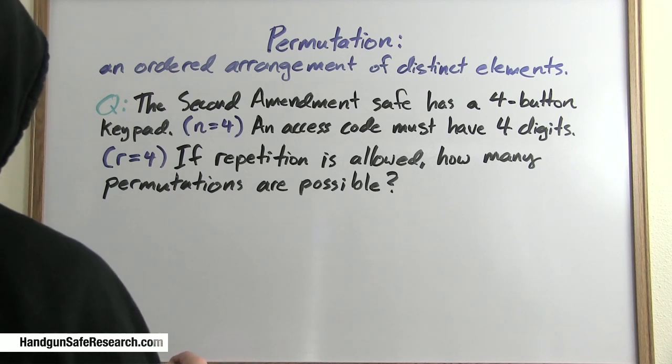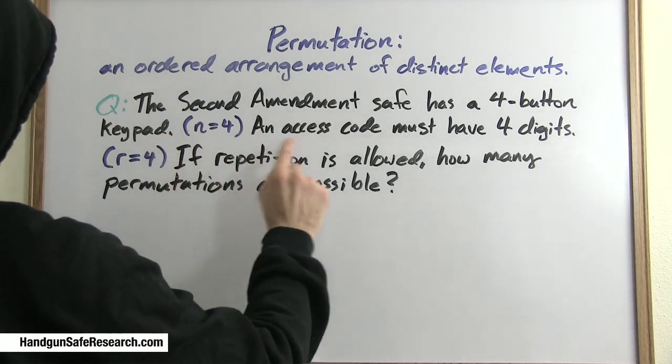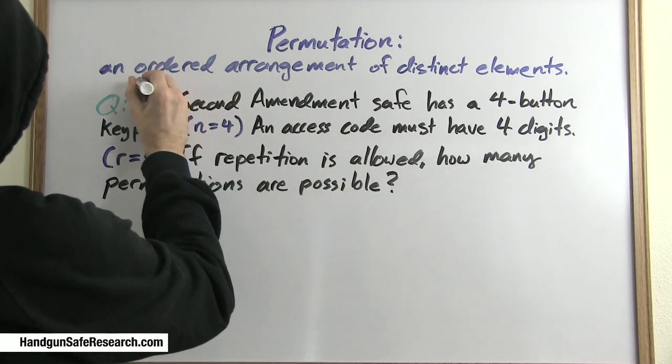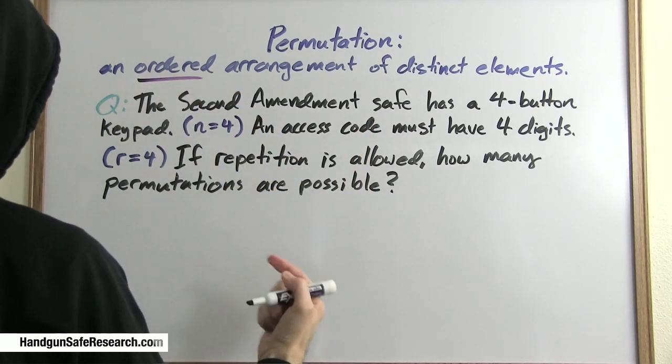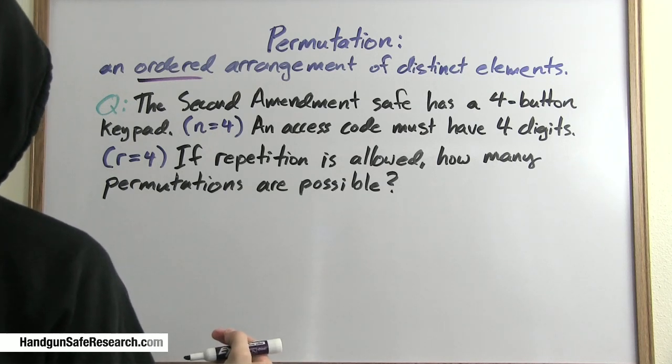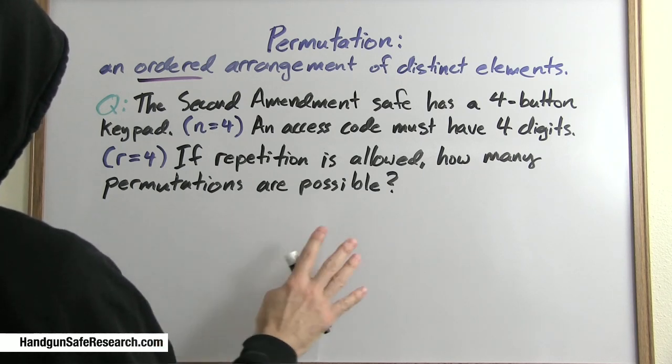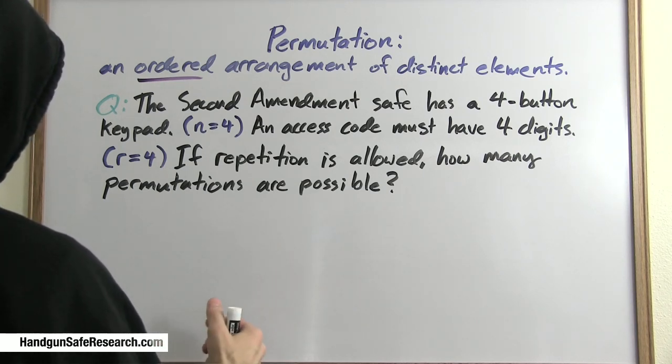Before I start talking about combinations and solve the problem that I ultimately want to solve, I need to talk about permutations. A permutation is an ordered arrangement of distinct elements. The operative word here is ordered. With permutations, order matters. When we start talking about combinations, we will find that order does not matter. So let's solve a simple permutations problem to introduce these ideas.